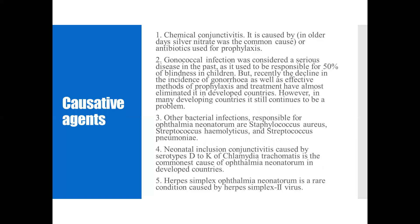What are the causative agents? First, chemical conjunctivitis — in old days, silver nitrate was a common cause due to its use for prophylaxis. Second, gonococcal infection was considered a serious disease in the past, as it used to be responsible for 50% of blindness in children. Recently, the decline in the incidence of gonorrhea as well as effective methods of prophylaxis and treatment have almost eliminated it in developed countries. However, in many developing countries it still continues to be a problem.